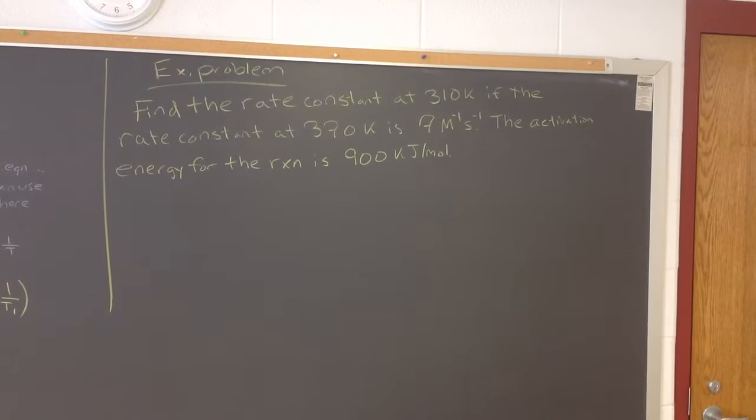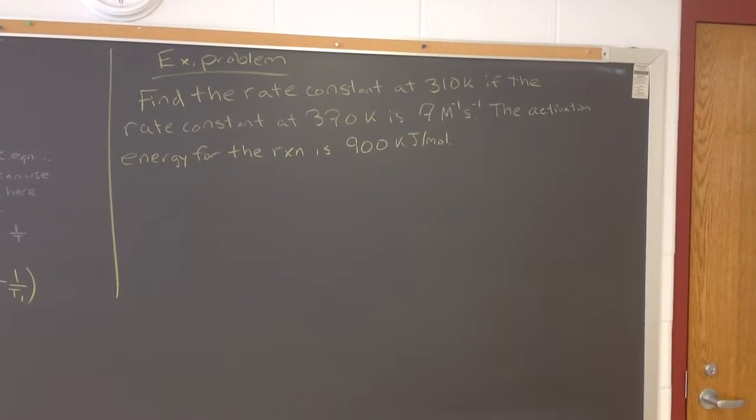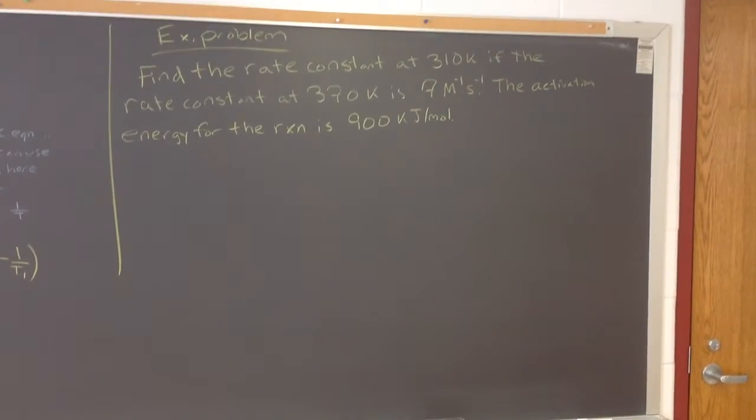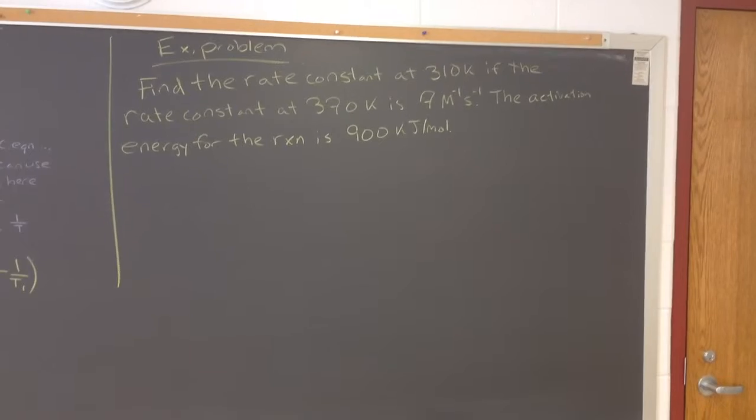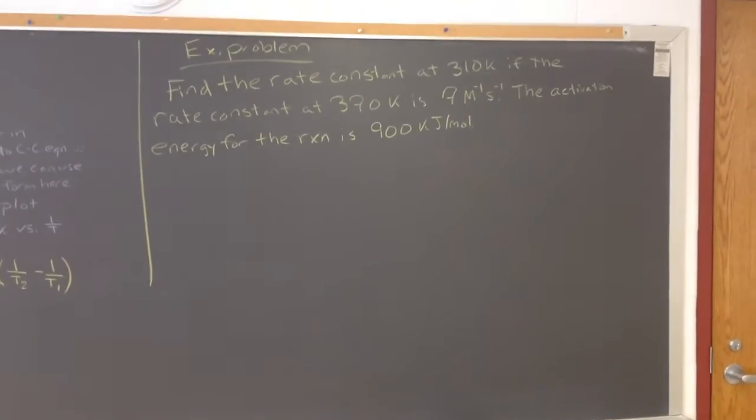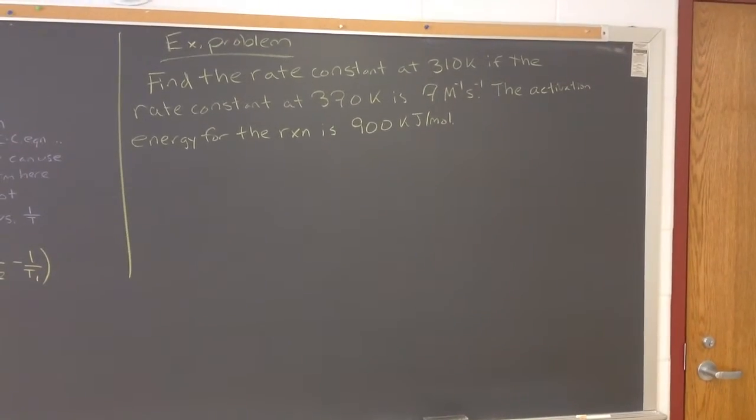Okay, so let's look at this problem now here. The example problem here shown says, find the rate constant at 310 Kelvin if the rate constant at 370 Kelvin is 7 molar, or 7 reciprocal molar per reciprocal second. So that, one thing we should remember, that rate constant with these units should indicate to us that we have a second-order reaction. Now, that's not really critical for determining the other rate constant, but it should have the same units.